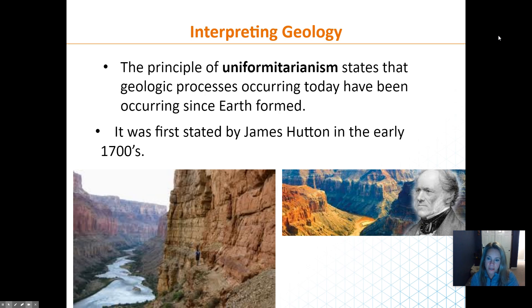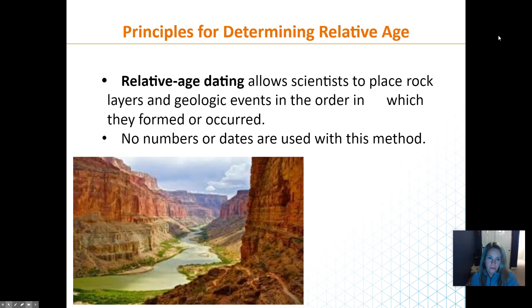Uniformitarianism was first stated by James Hutton in the 1700s. He observed river erosion processes and noted that if they are going on today in the same manner, they were going on millions of years ago as well.